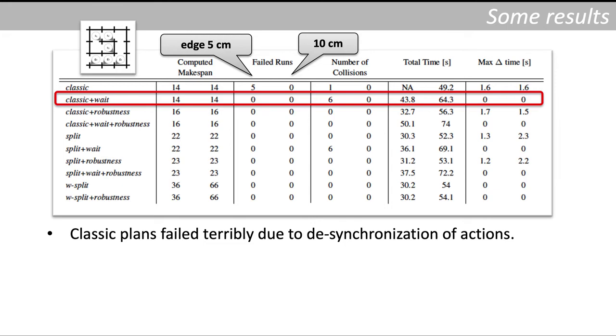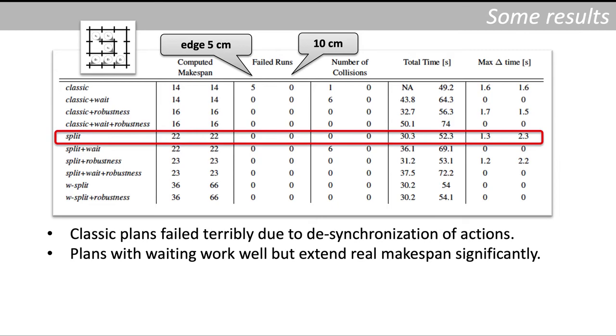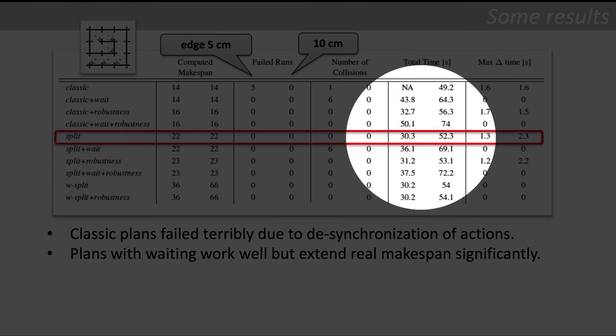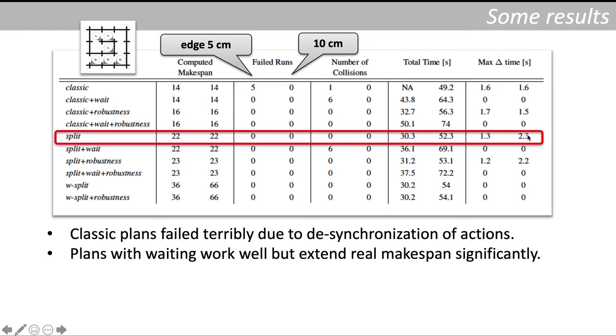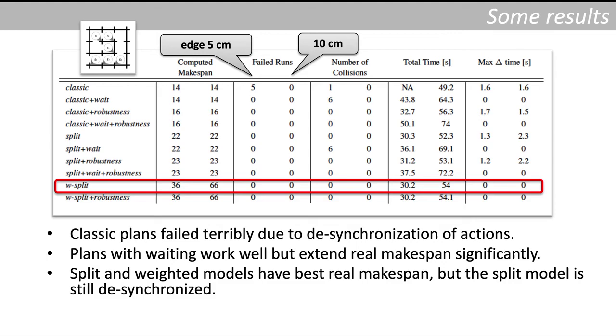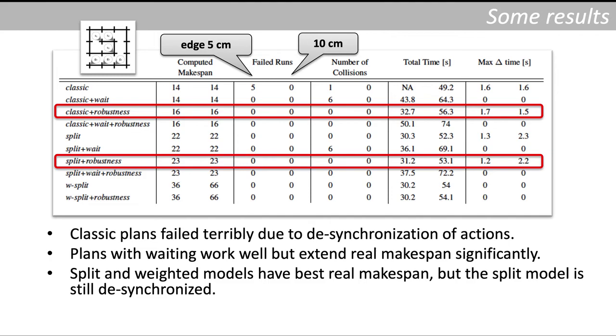So what about the split model? In split model we actually solve the problem with failures. The duration of the plan is now much faster, but still the max delta time is non-zero, so the plans are desynchronized. We can solve it by using weighted arcs in the model. We call it a W split model, but this requires a modification of the solver to handle edges of different length.